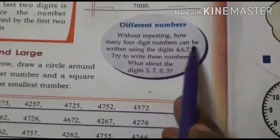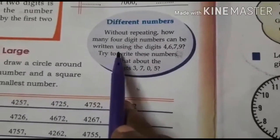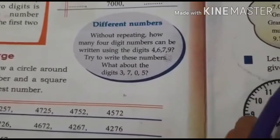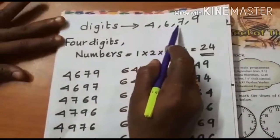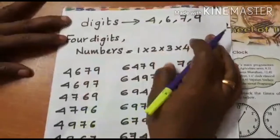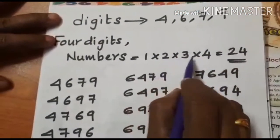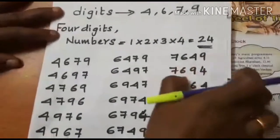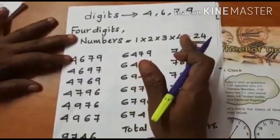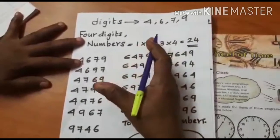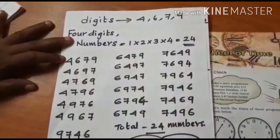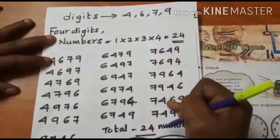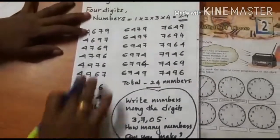Without repeating, how many 4-digit numbers can we form using the digits 4, 6, 7, and 9? Try to write these numbers. The digits are 4, 6, 7, 9. In 4-digit numbers we already studied — we can write 1 × 2 × 3 × 4, that is 24 numbers can be made. Starting from 4: 6 numbers. Starting from 6: 6 numbers. Starting from 7: 6 numbers. And starting from 9: 6 numbers. Therefore 24 numbers can be made.